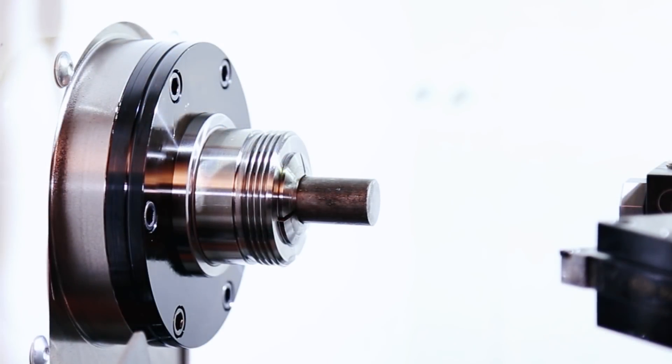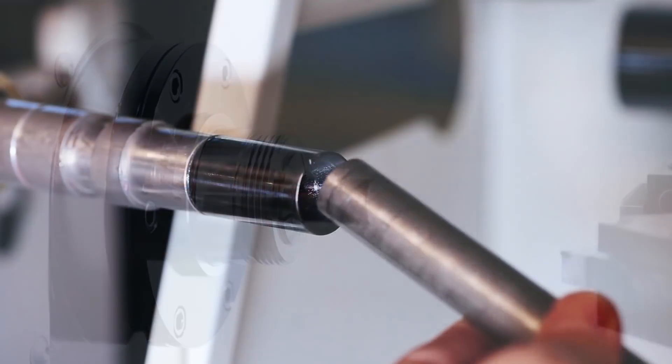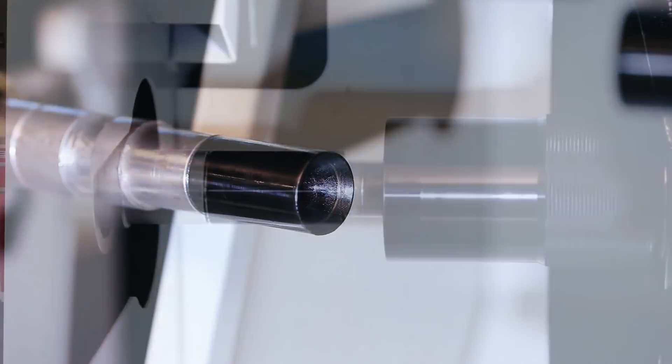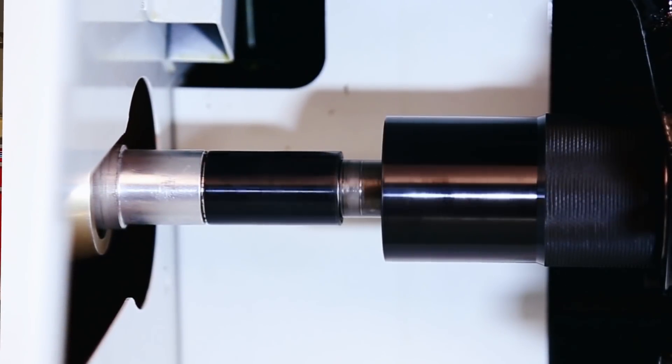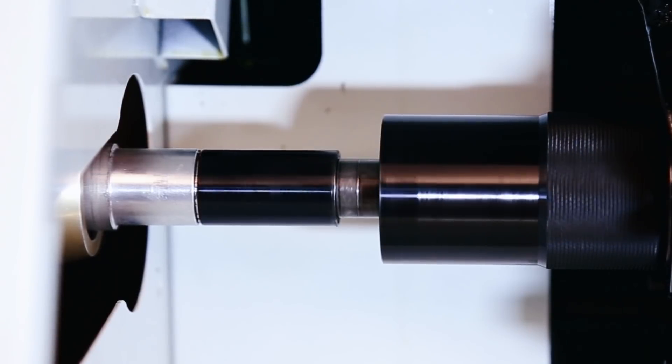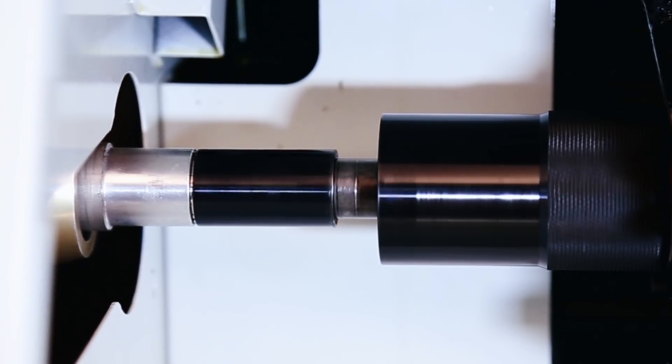When we're running a job, the front of our stock is going to be supported by our 5C collet. But the back of our stock, this tail end of our material, is going to be centered and held in place by this conical live center. This push rod will be under constant pressure while the machine is running, holding that material in place.